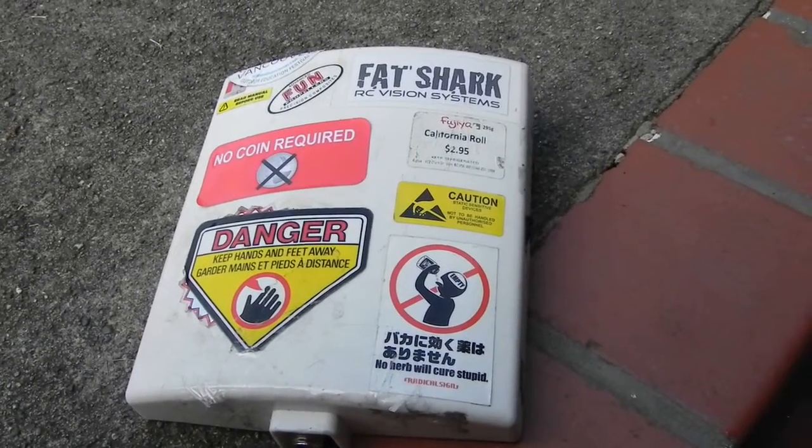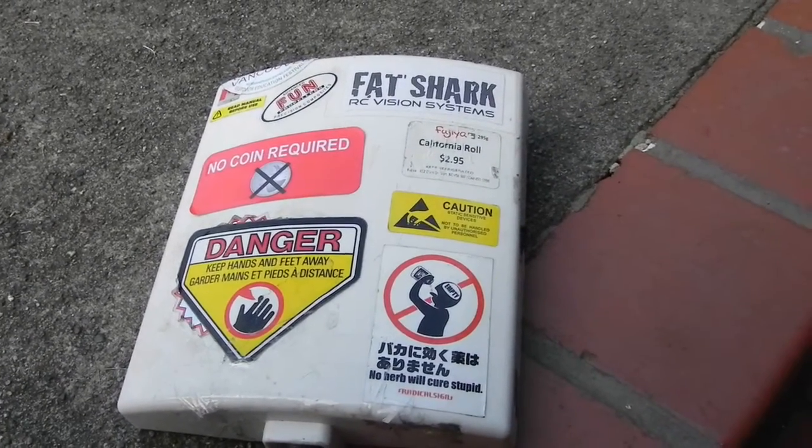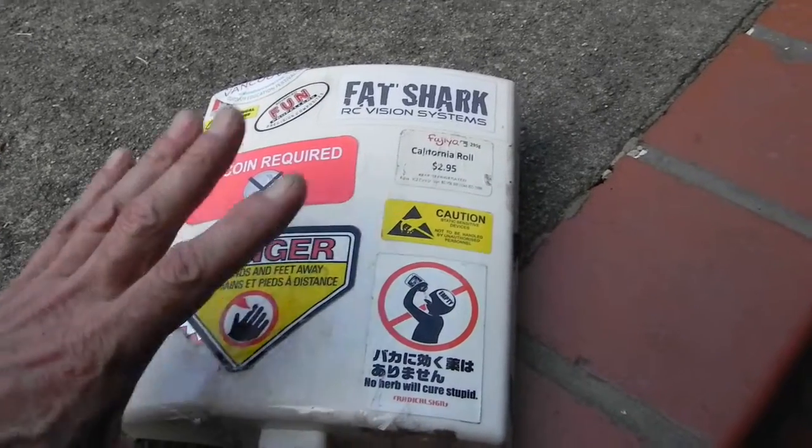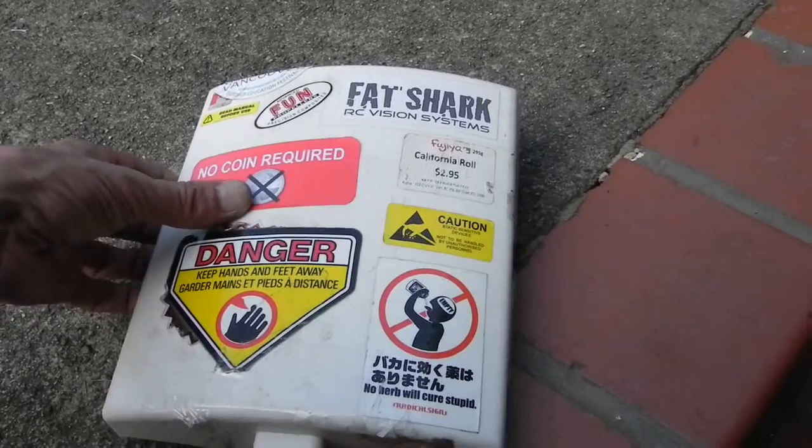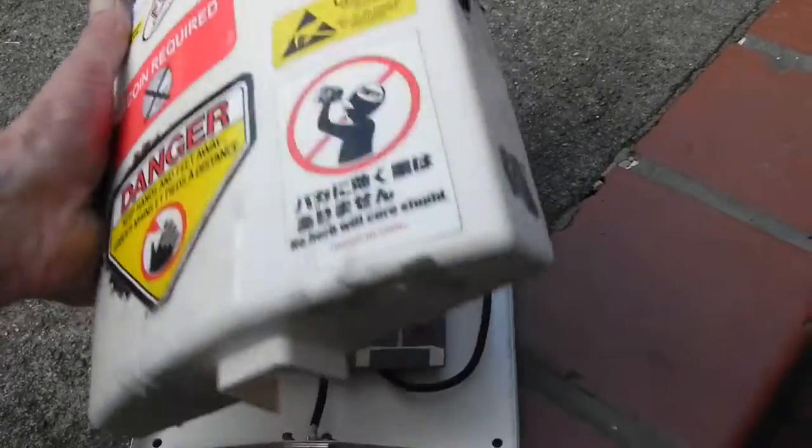What's inside the 18dbi patch antenna from FPV model. This is a really good antenna. 18dbi, it's about $55 or $60 and it works flawlessly.